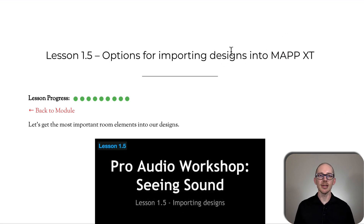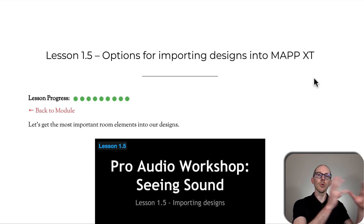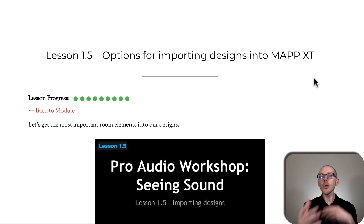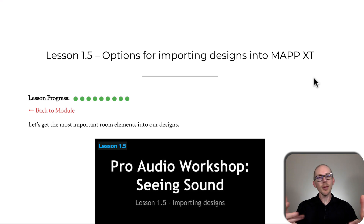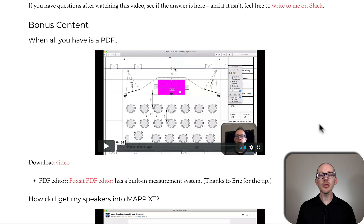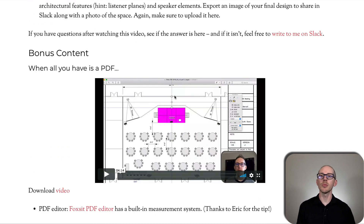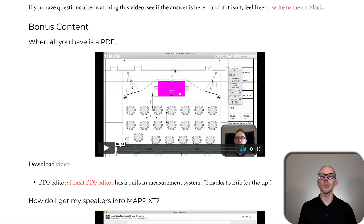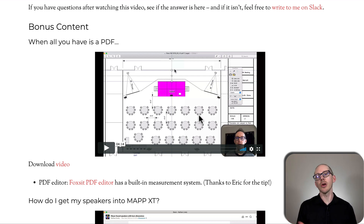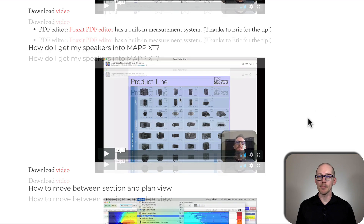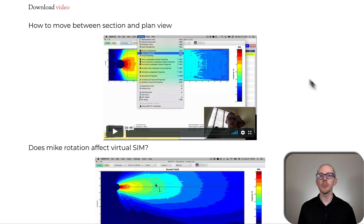Lesson 1.5: options for importing designs into MapXT. This is where you're going to learn to start putting your room — your performance spaces — into the design and prediction software so that you can start playing in that sandbox with more realistic elements, not just the default room that MapXT opens with, but your own personal elements. In a lot of these lessons there's a short video up top that teaches you the main critical things, and then there will often be supporting videos below that, which came up as people asked questions. For example, in this video I teach my process for getting a design into MapXT when all you have is a two-dimensional PDF that you can't really import. And there are supporting videos like how to move between section and plan view.